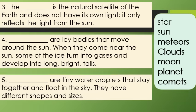Number 5. The blank are tiny water droplets that stay together and float in the sky. They have different shapes and sizes.